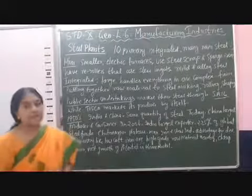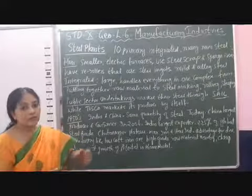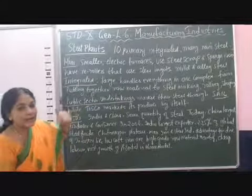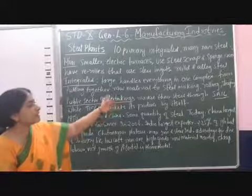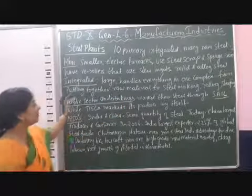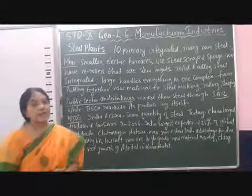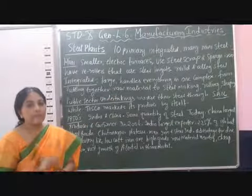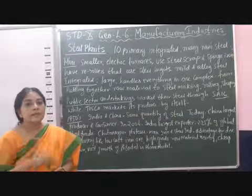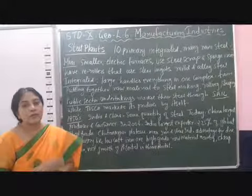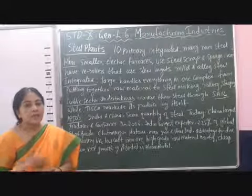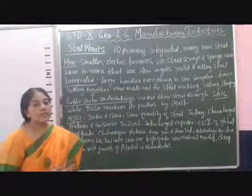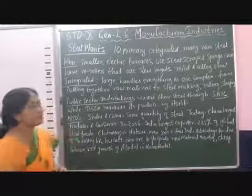But integrated steel plant is a large steel plant. One difference is mini steel plant is small, while integrated steel plant is large. Mini steel plant does not handle everything, while integrated steel plant handles everything in one complex — from putting together raw materials to steel making. Raw materials for making steel in an integrated plant include iron, coking coal, and limestone in the ratio 4:4:1. They also add manganese to harden the steel, and rolling and shaping is also done in the integrated steel plant.